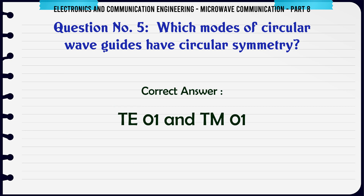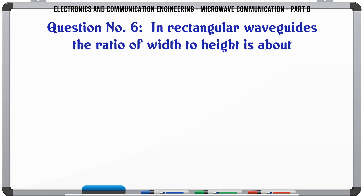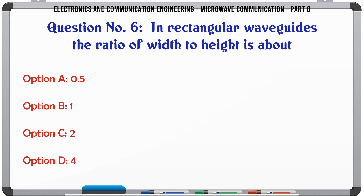In rectangular waveguides, the ratio of width to height is about — A. 0.5, B. 1, C. 2, D. 4.